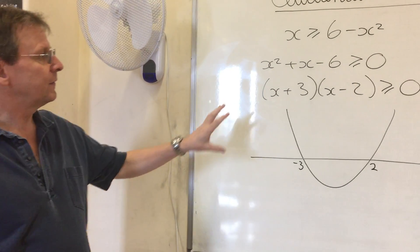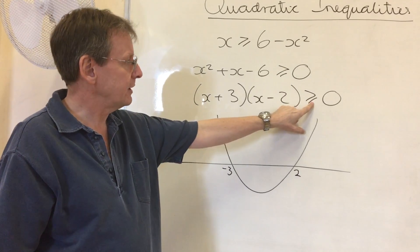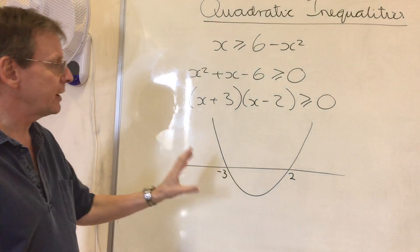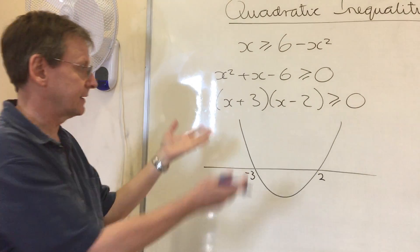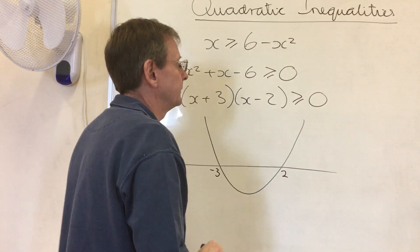But, because we're trying to find out where this function is greater than or equal to 0, we need to know where the graph is above the x-axis. That's where it's positive, that's where it's negative.